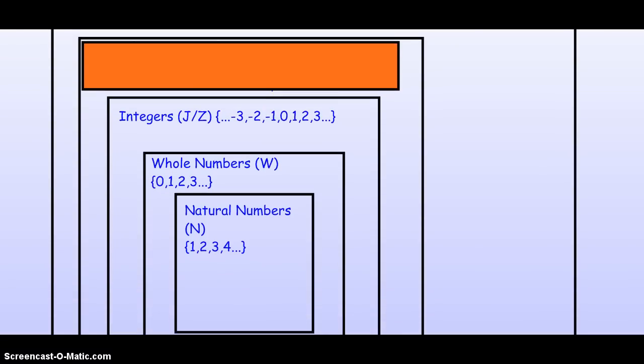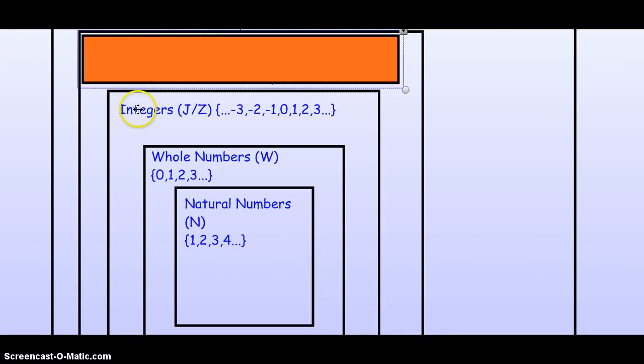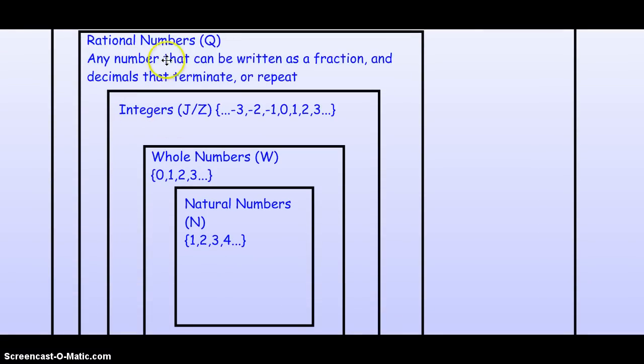The next largest set. Here is where it gets a little tricky. Now, we are at the rational number set. And this is abbreviated by a capital Q, not an R. Rational numbers are any numbers that can be written as a fraction. That's the first thing to remember.